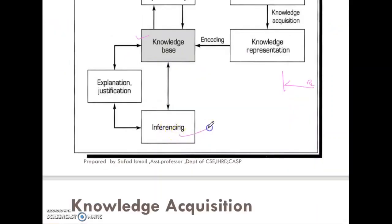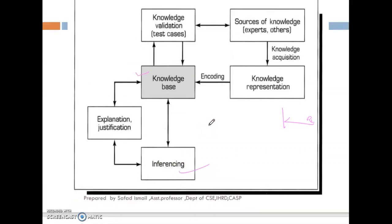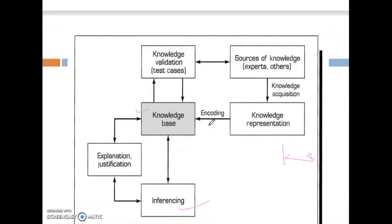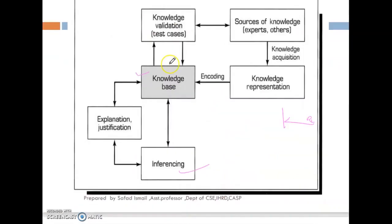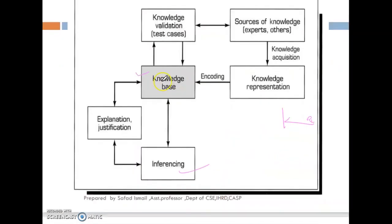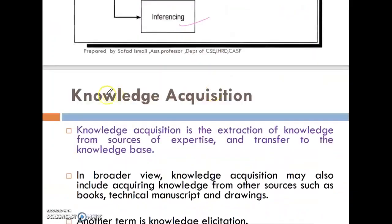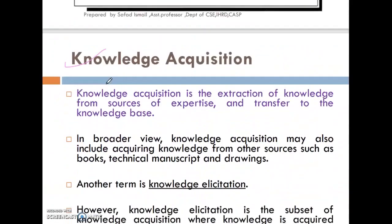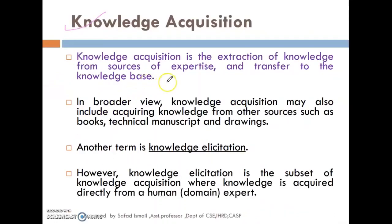Inferencing — we have to understand how to get from knowledge. In our guide, we have a tabular formula and process flow. We have to understand what is actually knowledge acquisition. Knowledge acquisition — we already have knowledge acquisition.